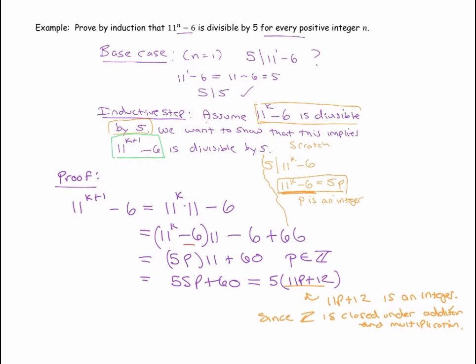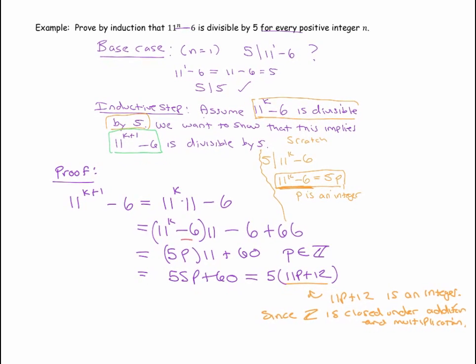The integers are closed under multiplication and addition, which just means that if you multiply two integers, you get another integer. If you add two integers, you get another integer. So that is the end of the proof.